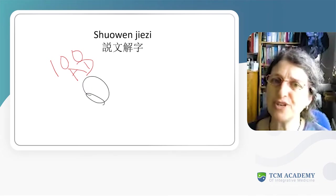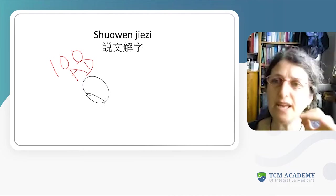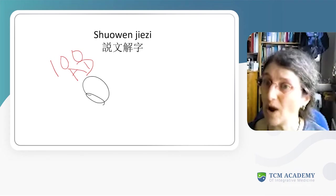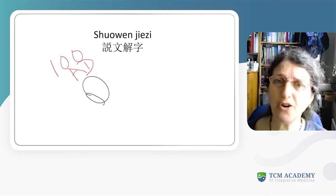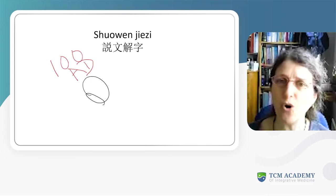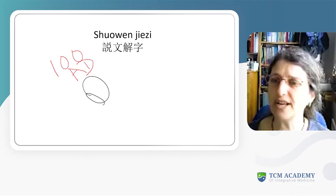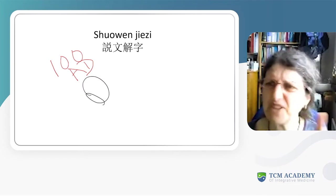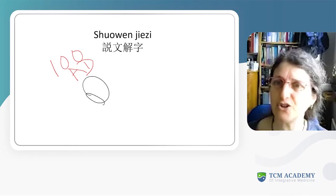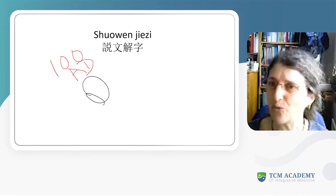Already by 100 AD, this guy called Xu Shen, he wrote this, and they already by that time had forgotten why the characters were the way they were. So a lot of his interpretations, his descriptions, are actually not really proper etymological descriptions. They're more like looking at the character and thinking 'I think this might have something to do with this.' So if you were really into etymology, then you wouldn't be looking at the Shuowen Jiezi.